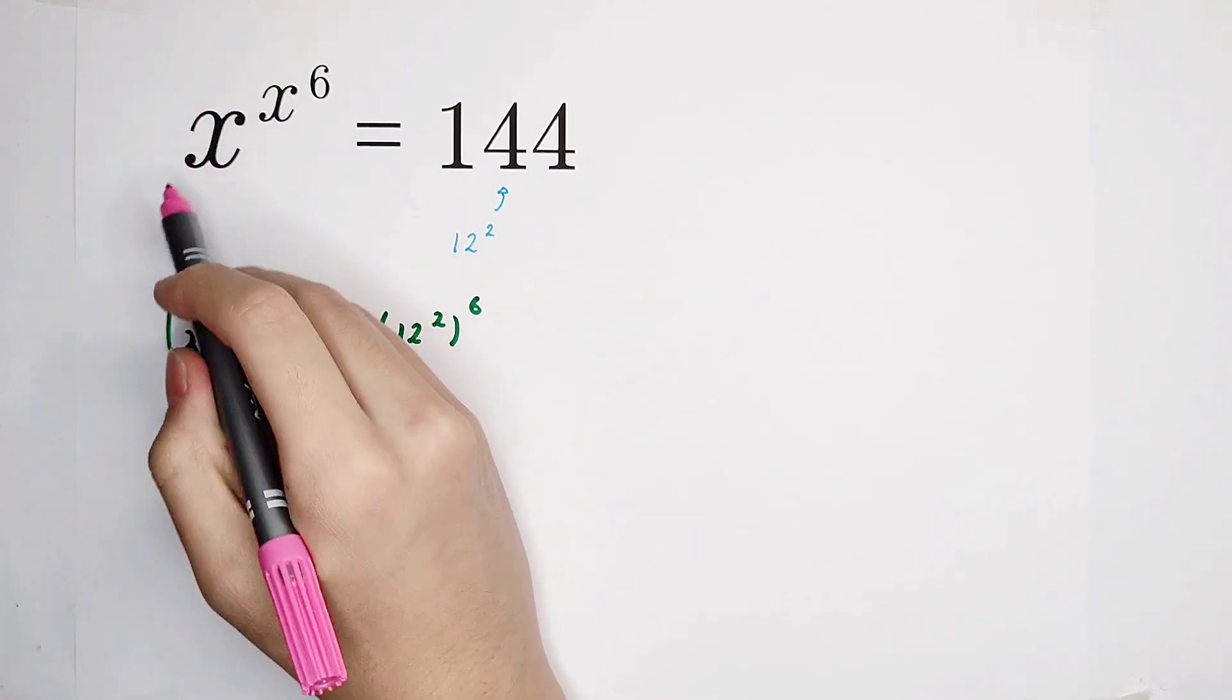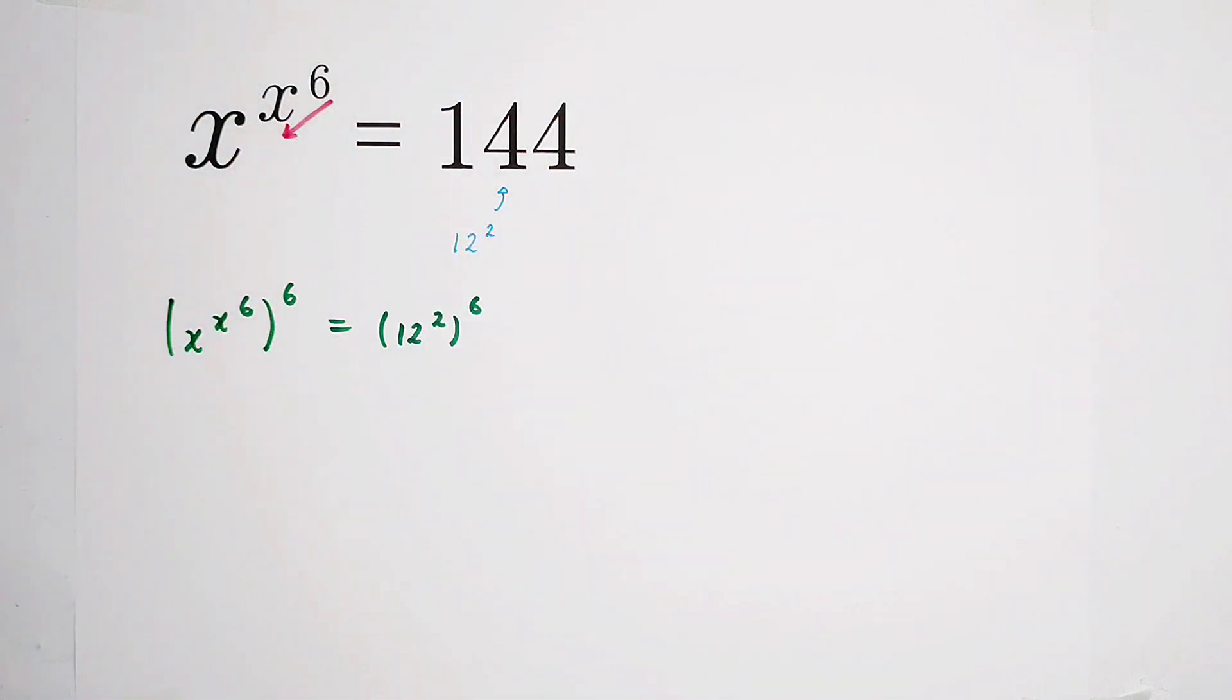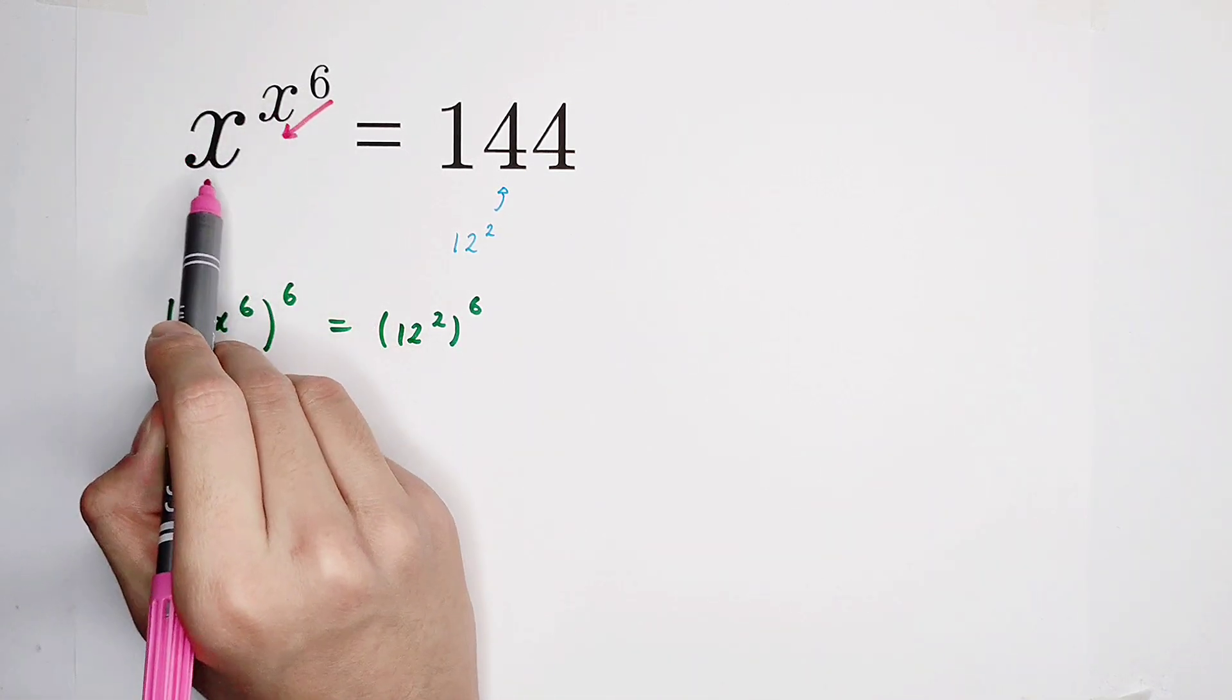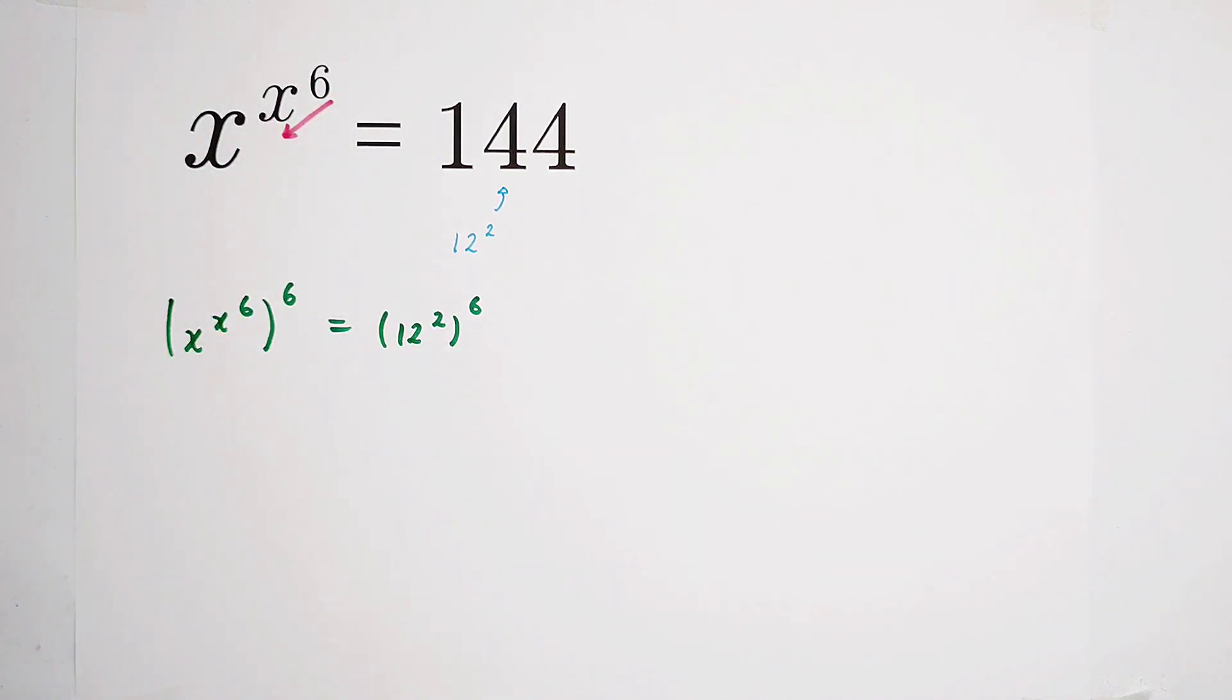Pay attention, the exponent here is actually x to the power of 6. The order of calculation is from the top to the bottom. So that means x to the power of 6 is the exponent of x, and 6 is the exponent of this x. So now, what shall we do? We have the formula.